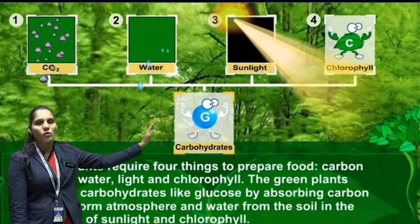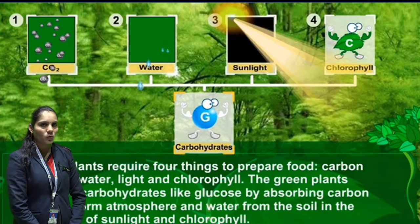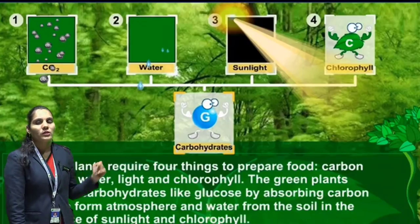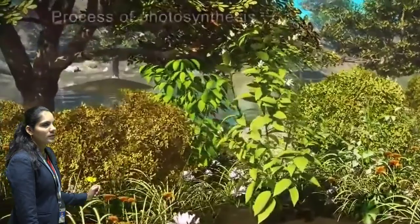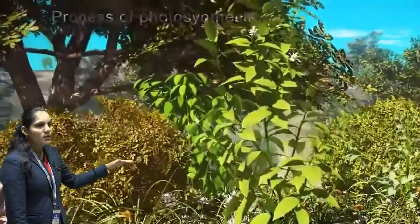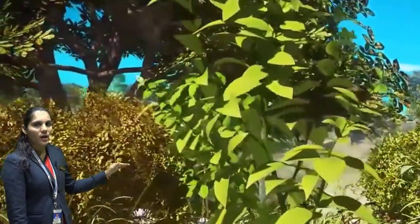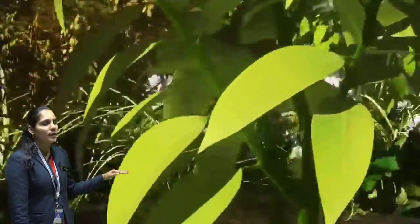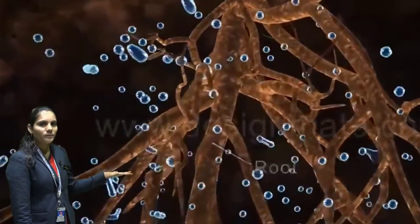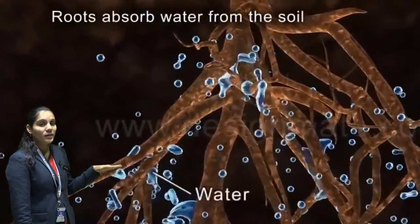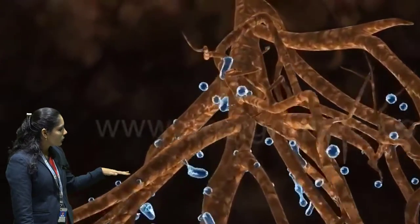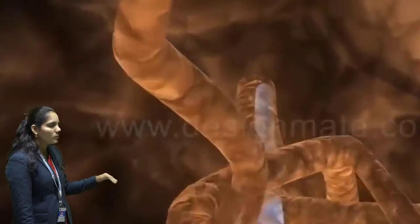With the help of those raw materials, in the presence of the chlorophyll pigment and sunlight, they prepare their own food. Now let us start the photosynthesis process. Plants have roots. With the help of the roots they absorb water. The function of the root is absorption of water and giving support to the whole plant. The root absorbs water from the soil.